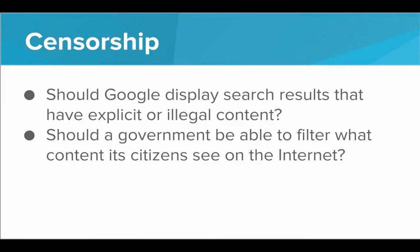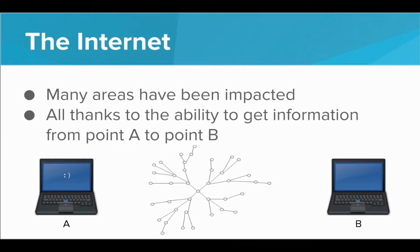Censorship is also a huge issue. Should Google filter explicit or illegal search results? Should a seven-year-old be able to see horrific or pornographic images? Should a government be able to filter what its citizens see? Ideally the Internet should be an open place where all information is available, but things get complicated because different governments have different laws, and certain Internet services may be illegal in one country but not another. All in all, the Internet has significantly impacted several areas both positively and negatively — all thanks to simply getting information from point A to point B.